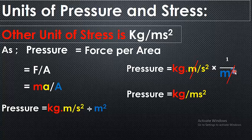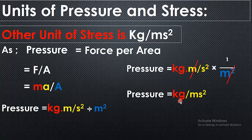This square meter means M times M, and 1 M has been cancelled out with this square meter, so we are left with only 1 M. In this way, pressure is equal to kg per meter second square.